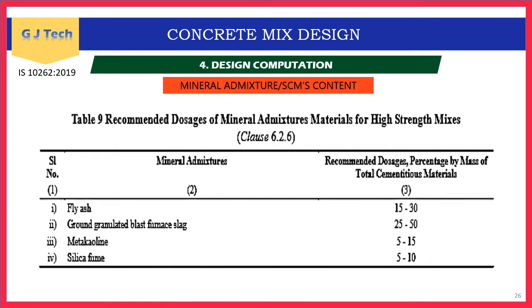Mineral admixture content: IS 10262 Table 9 gives maximum and minimum dosages for SCMs. Fly ash: 15–30%; GGBS: 25–50%; Metakaolin: 5–15%; Silica fume: 5–10%. Metakaolin and silica fume are more reactive, hence their percentage is restricted. GGBS can replace up to 50% of cement. Research on special concretes also explores different replacement proportions.